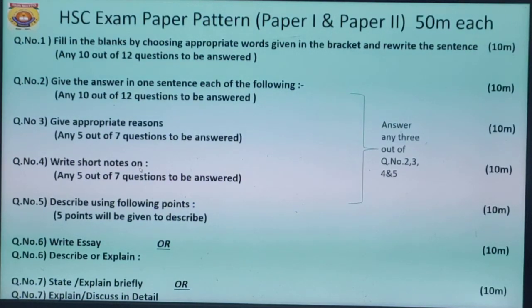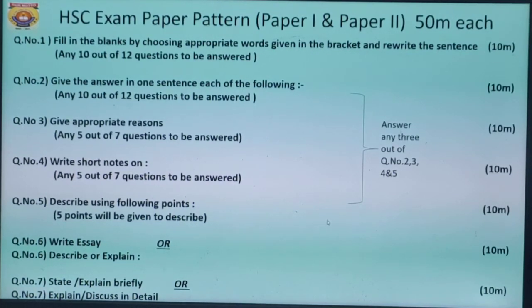Question number 4: write short notes on. Children, here 7 questions will be given and you have to answer any 5 out of 7. Again, 5 times 2 marks each, that's 10 marks. Question number 5: describe following points. Children, there will be 5 points and compulsorily all 5 points have to be described. This consists of 2 marks each, that is 10 marks.